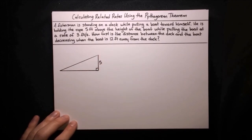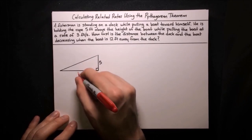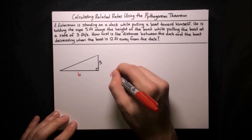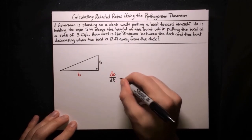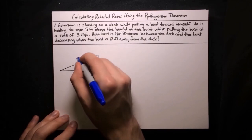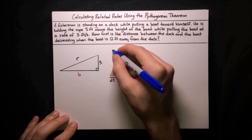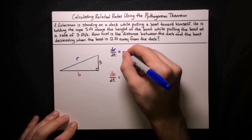We want to find the rate of change of the distance between the dock and the boat. The boat is here, the dock is here, and the base of the triangle is that distance — let's call it b. We want to find db/dt. We're told that we're pulling in the boat at a rate of 3 feet per second, so the rope is disappearing at 3 feet per second. The rope is the hypotenuse — let's call it r — and since r is getting shorter by 3 feet per second, dr/dt = −3.